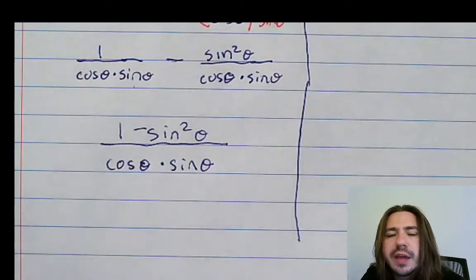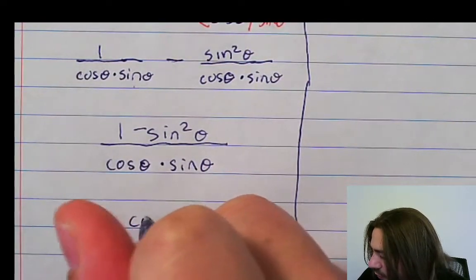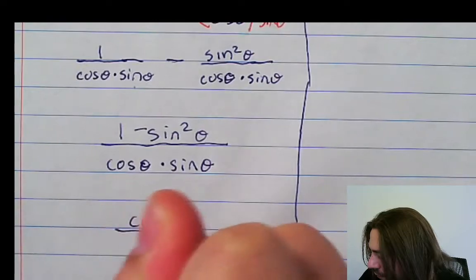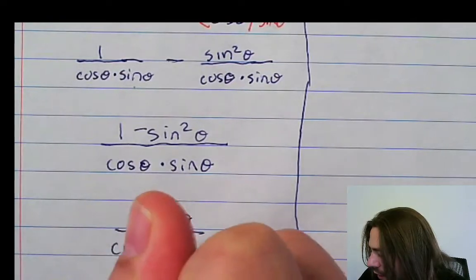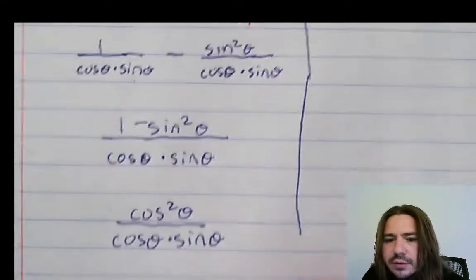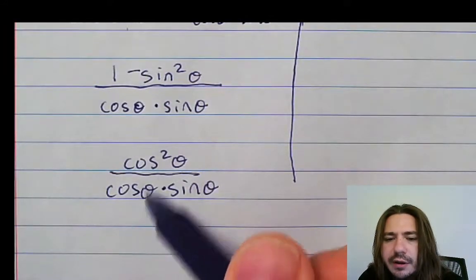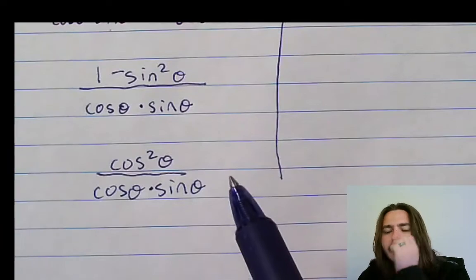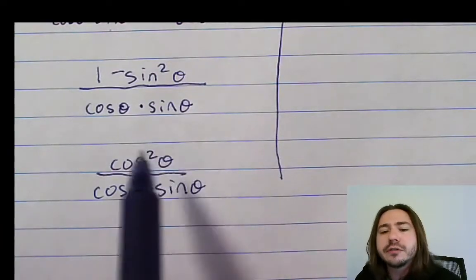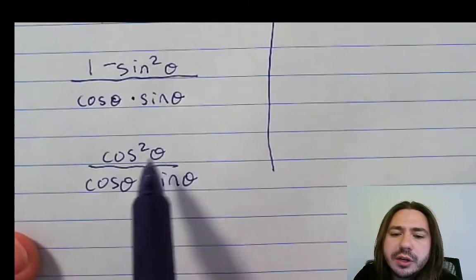1 minus sine squared theta is equal to cosine squared theta. And once we rewrite that, we'll see that we actually have a cosine on the numerator and the denominator that will reduce to 1. We actually have two factors of cosine theta on top. So we only need to cancel out one of them.